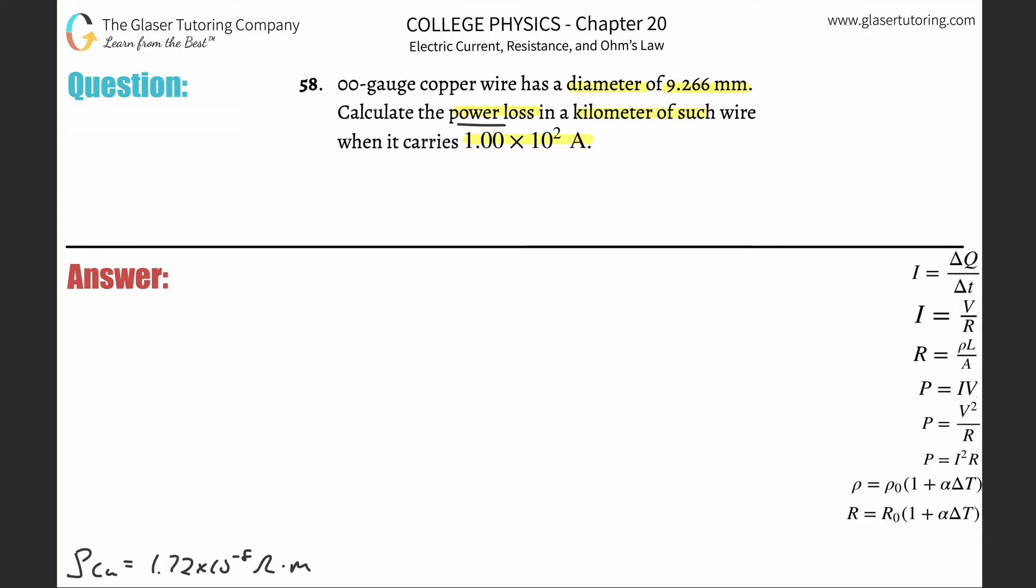So it says to calculate the power loss when it's carrying 1 times 10 to the 2 amps. What we can do is take the power and realize that that is equal to the current that's flowing through it multiplied by the resistance.